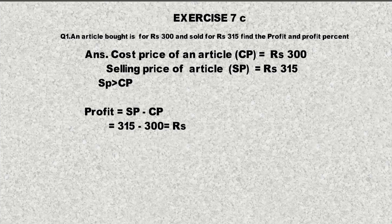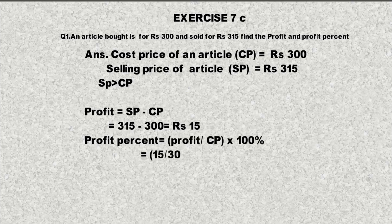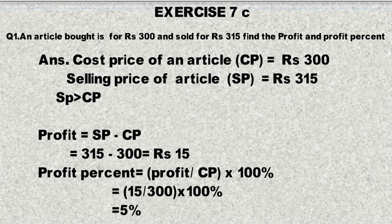Now we calculate profit percentage. The formula for profit percentage is: profit over cost price, multiplied by 100%. In this case, profit is 15 rupees and cost price is 300. So 15 over 300 multiplied by 100% gives us 5%.